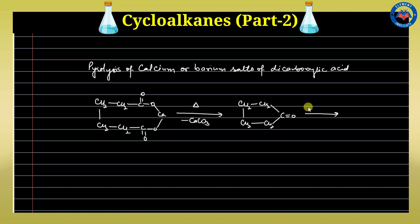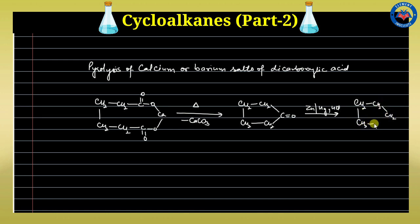In the next step, in the presence of zinc amalgam and HCl, we treat this for reduction. The carbon-oxygen group is converted to a CH₂ methylene group, giving us cyclopentane. So this is the seventh method we have discussed here.